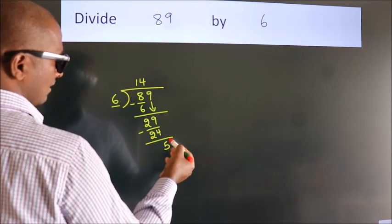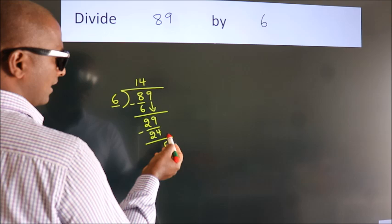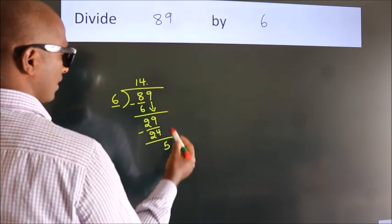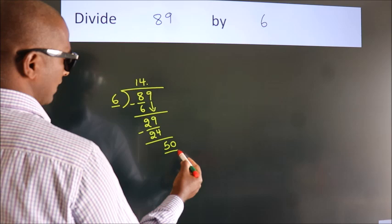After this, there are no more numbers to bring down. So what we do is put a dot and take 0. That's 50.